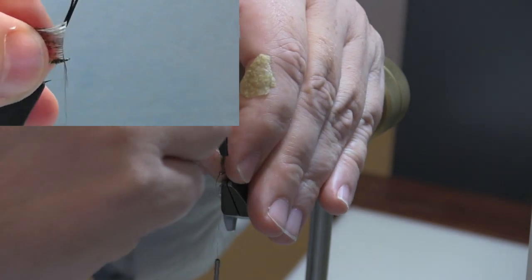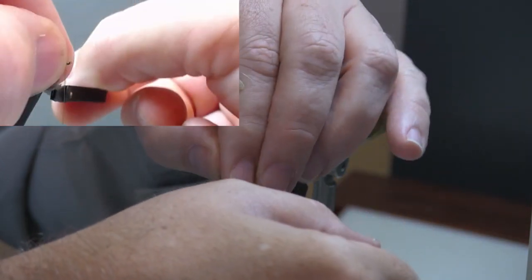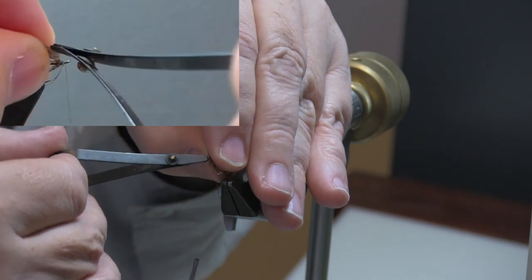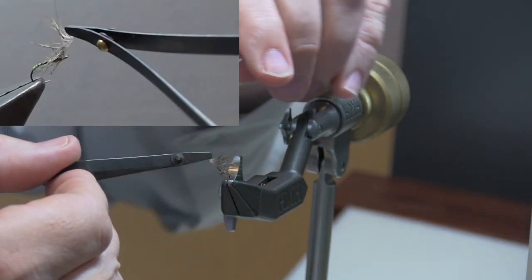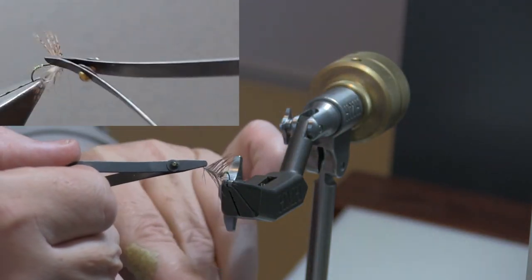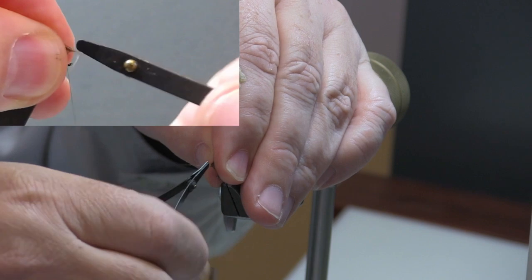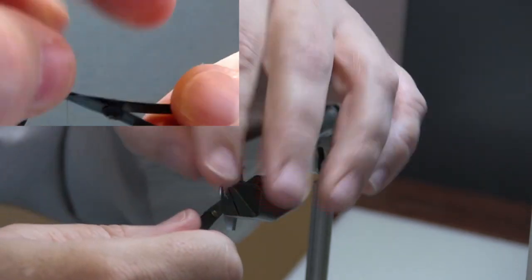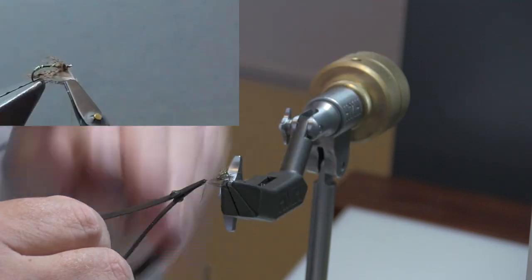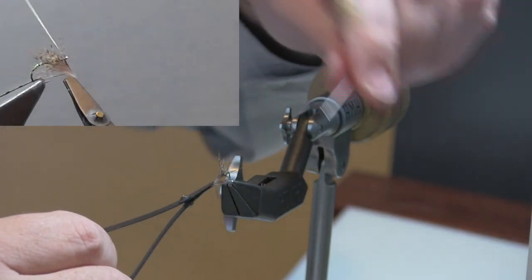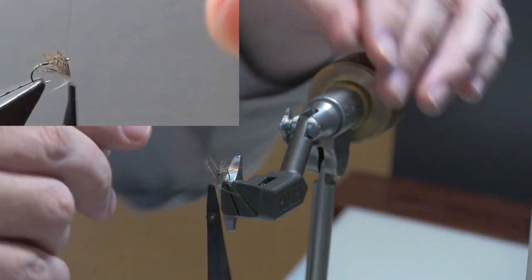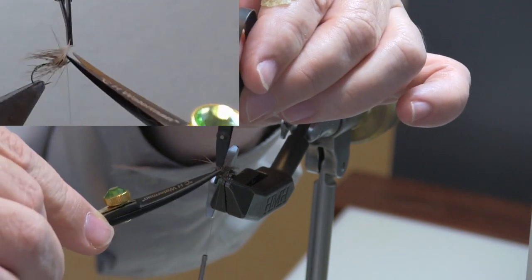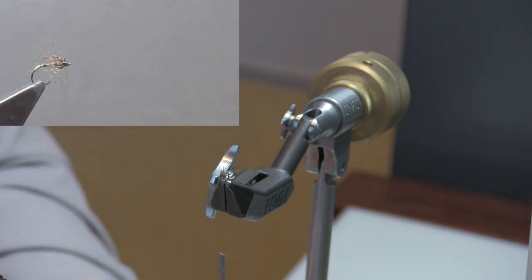Bring that up, continue to fold those fibers back. Once you have that first turn in, then you can let go of your hackle pliers if you need to. Trim away your excess.